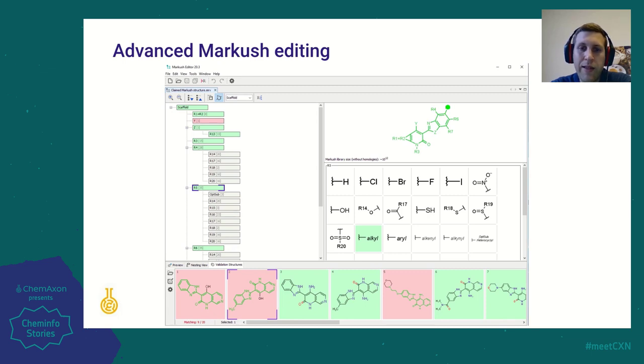You get immediate feedback after any modification, with warnings if some example structure is not covered after some modification. You can test not only exemplified structures, but also any other structures, for example from your competitor's patent against your Markush draft.